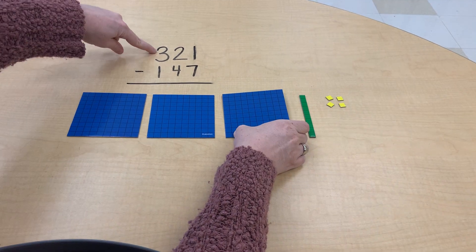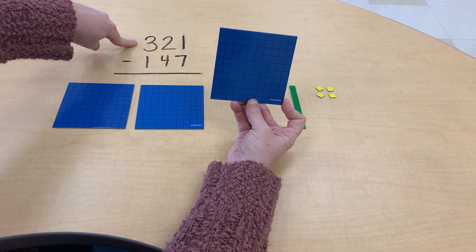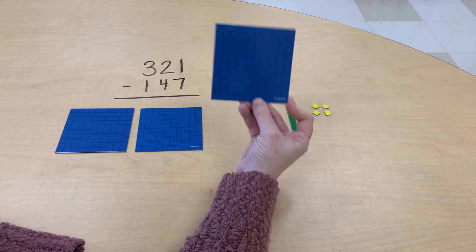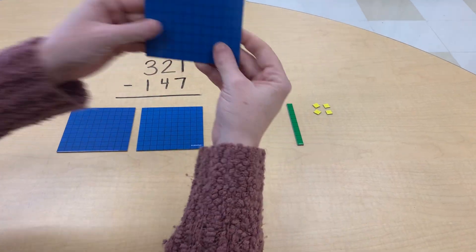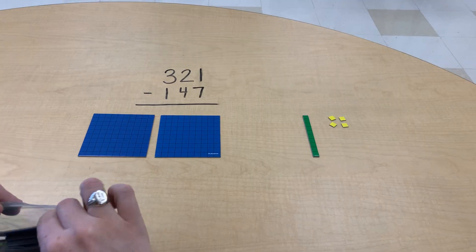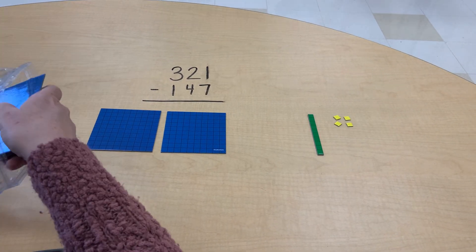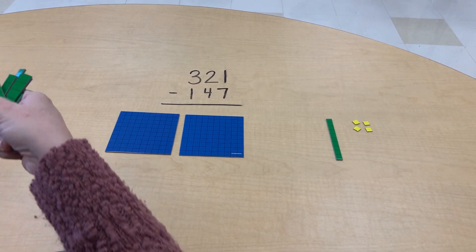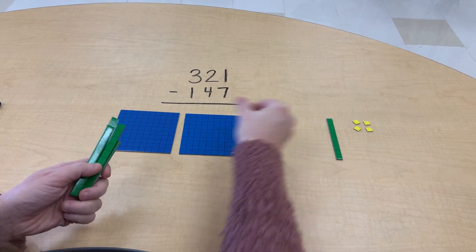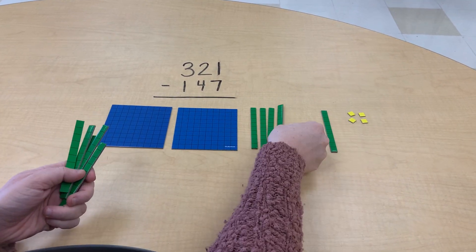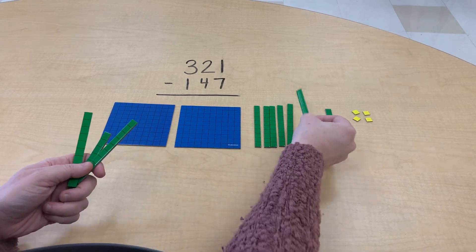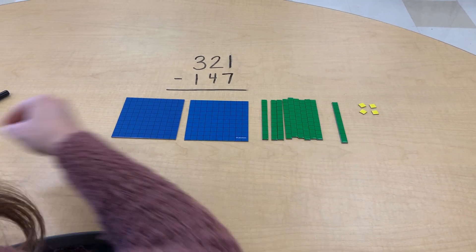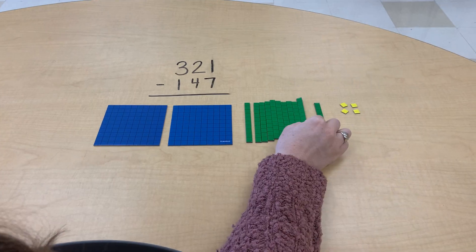And our students know that there are ten tens in one hundred. So I am going to break this into ten tens. So I'm going to regroup by taking this hundreds and replacing it with ten tens. One, two, three, four, five, six, seven, eight, nine, ten. All right.